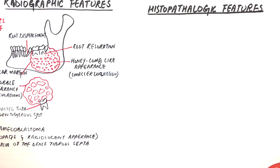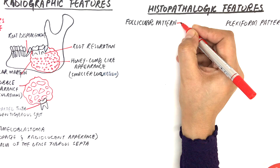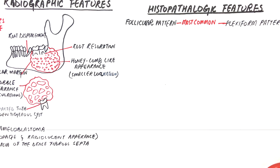Under a microscope, ameloblastomas possess a combination of cystic and solid features. Based on these features, ameloblastomas have six microscopic subtypes. These subtypes are the follicular and plexiform patterns, which are considered the most common types. Other less common histopathologic patterns include the acanthomatous, granular cell, desmoplastic, and basal cell types.